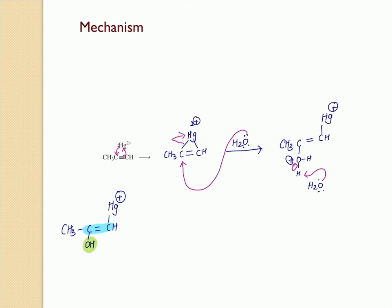In this mercuric enol intermediate, you have a carbon-carbon double bond and a hydroxyl group, making it an enol form. Since mercury is involved, it is called a mercuric enol. The next step involves this mercuric enol being converted into the mercuric ketone.